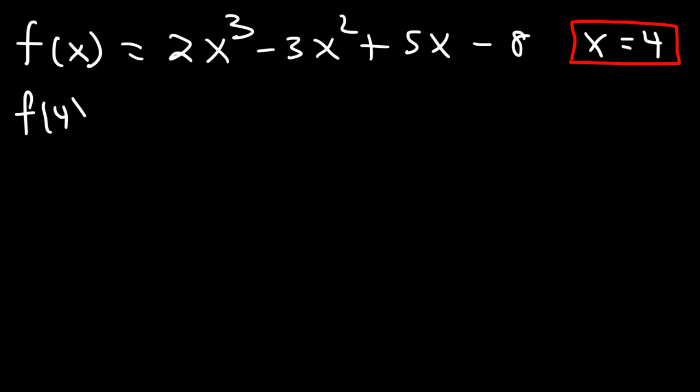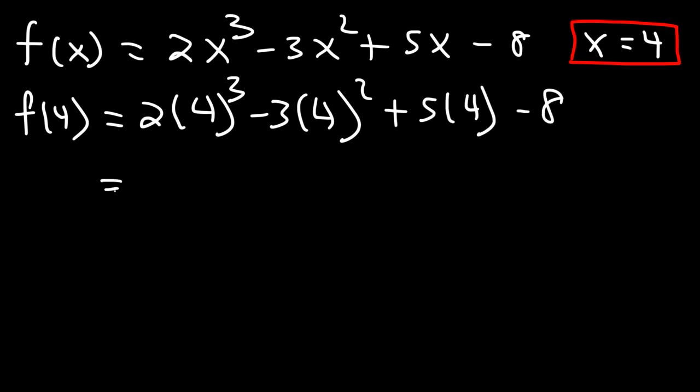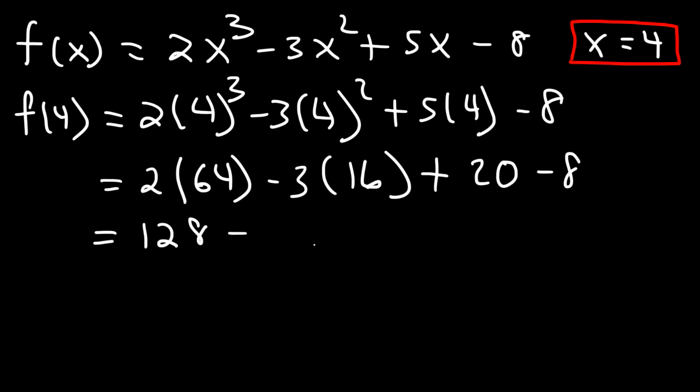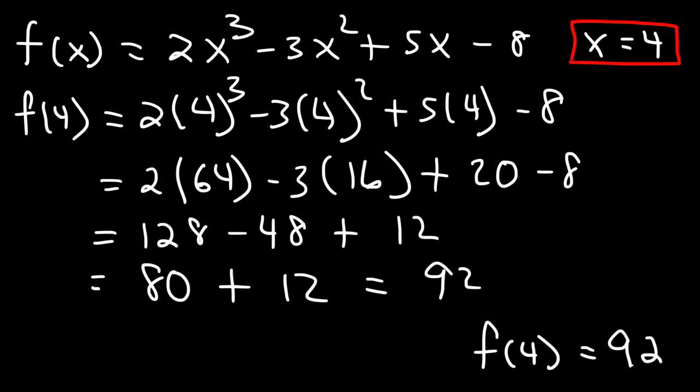So let's do it the old-fashioned way. Let's plug in 4. So what is 4 to the third power? 4 times 4 times 4 is 64. Now what about 4 squared? 4 times 4 is 16. And then 5 times 4 is 20. Now 2 times 64, 2 times 6 is 12, 2 times 4 is 8. 3 times 16, 3 times 10 is 30, 3 times 6 is 18. 30 plus 18 is 48. And 20 minus 8 is 12. Now 128 minus 48, that's 80. And 80 plus 12 is 92. So I'm going to write that over here. f of 4 is equal to 92.